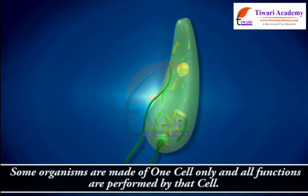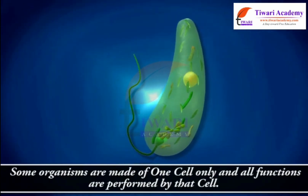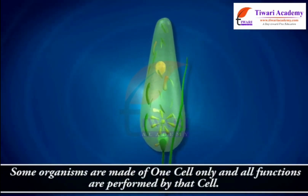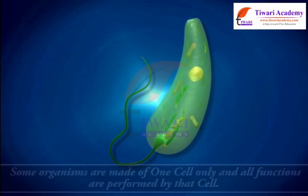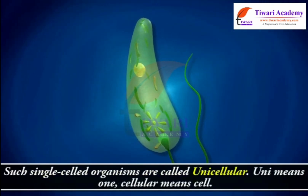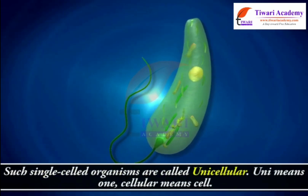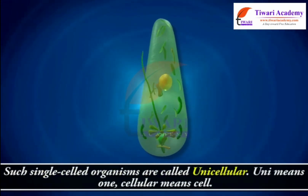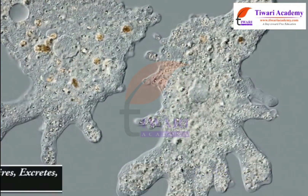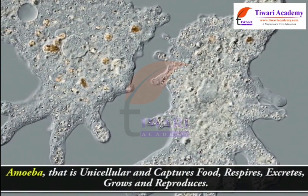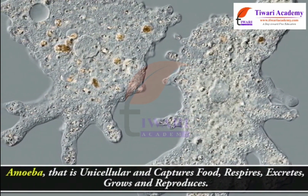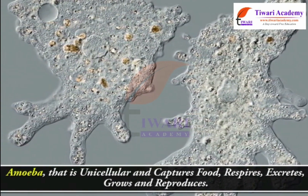Some organisms are made of one cell only, and all functions are performed by that single cell. Such single-celled organisms are called unicellular — 'uni' means one and 'cellular' means cell. An example is amoeba, which is unicellular and captures food, respires, excretes, grows and reproduces.